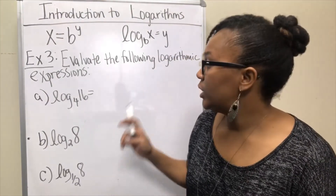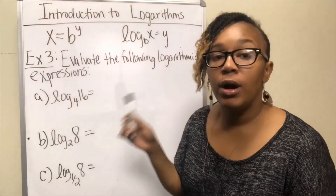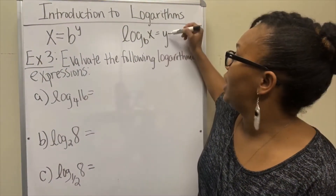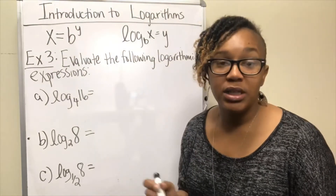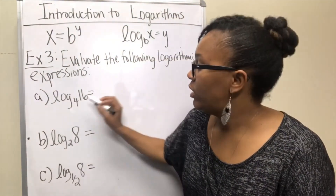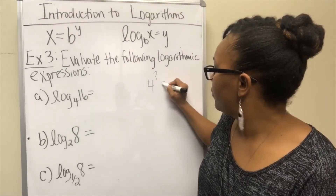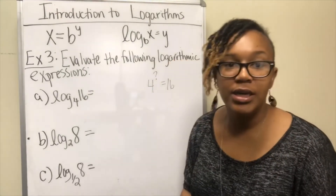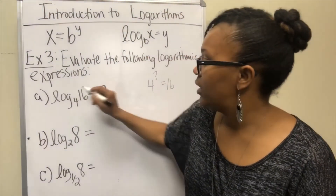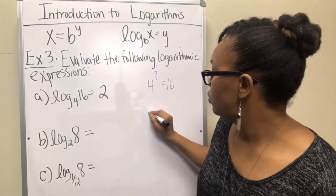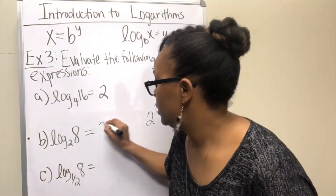For example 3, we want to evaluate each of these logarithmic expressions. Remember, on the other side of the log is the exponent — so log equals y, and y is the exponent. Basically we're looking for what exponent we need to raise 4 to in order to get 16. 4 to the second power is 16, so this equals 2. For the next one, 2 to what power equals 8? 2 to the third power equals 8, so that is equal to 3.